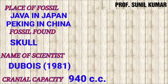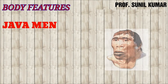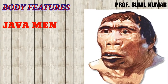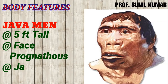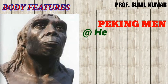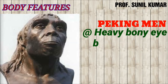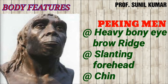The Java man showed features such as a prognathous face, was about 5 feet in length, had a massive jaw, and the chin was absent. When talking about Peking man, they had heavy bony eyebrows — very dense and prominent — a slanting forehead, and a chinless face. The chin was not present or not prominent enough to be easily visible.